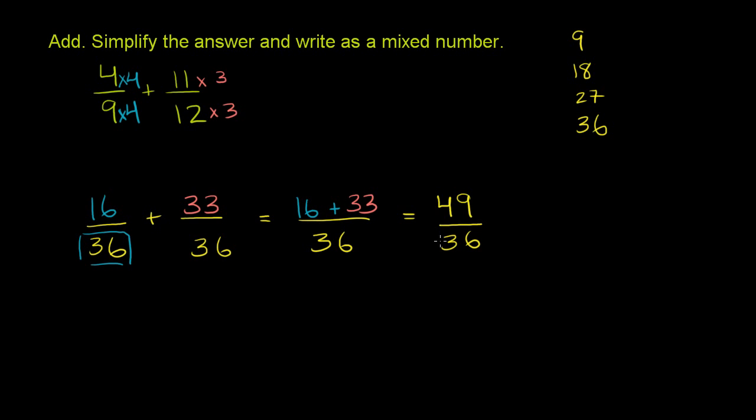Now, can we simplify this? 49 has 1. It's 7 squared. So it has 1, 7, and 49 as factors. This has a bunch of numbers, but it is not divisible by 7. So this is actually in simplest form, but this is an improper fraction. The numerator is larger than the denominator. So let's write it as a proper fraction.